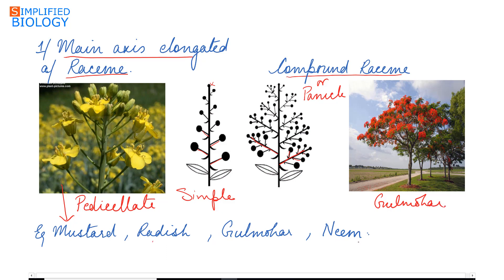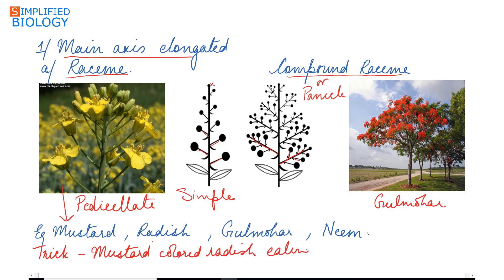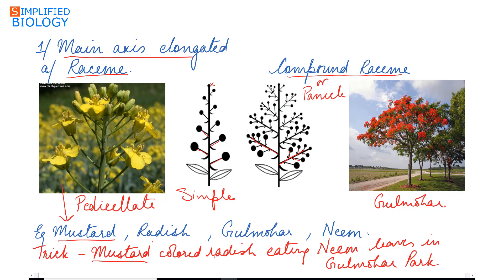The trick to remember raceme examples: mustard, radish, eating neem leaves in Gulmohar Park. Mustard is for mustard, radish, neem leaves, and Gulmohar Park — these are the key examples of raceme inflorescence.